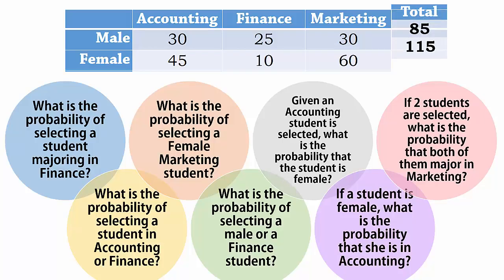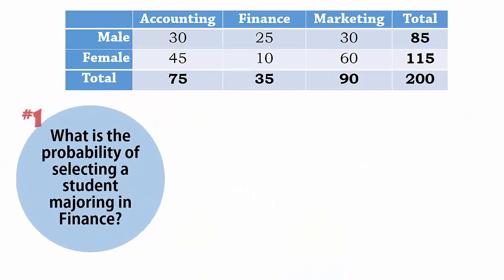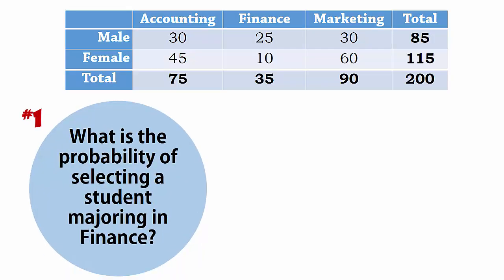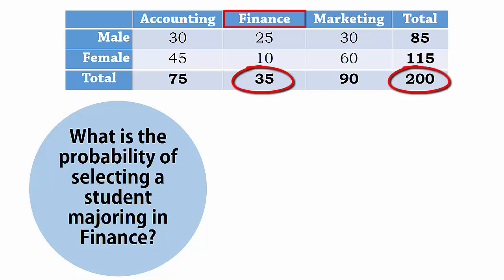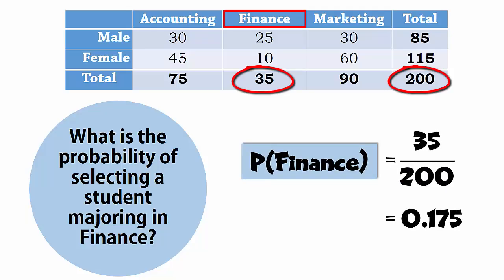First we find the row totals, and then the column totals. Number 1: What is the probability of selecting a student majoring in finance? Here we see that there are 35 students in finance out of the 200. Therefore, the probability that a student majors in finance is 35 over 200, which gives 0.175.